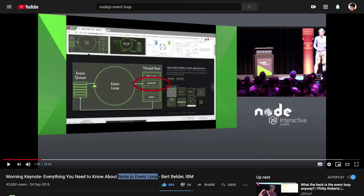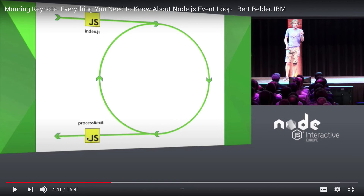In that video, Bert explains that the Node.js event loop gets triggered by whatever file is trying to run Node.js — for example, an index.js file running a particular CLI. A particular event loop starts, the Node.js process begins, which is a global, and it loops around a bunch of processes. Finally, when everything is done, it cleans itself up and the Node.js process exits.